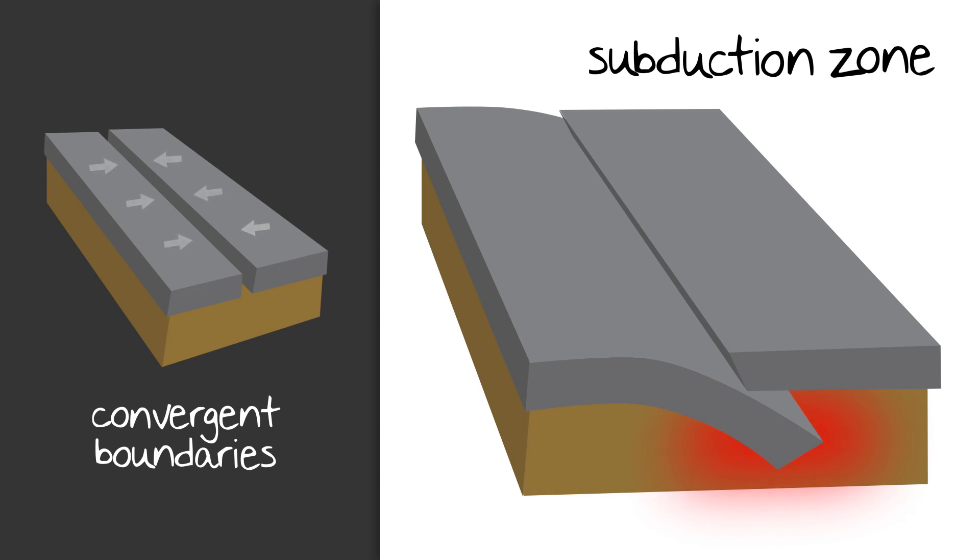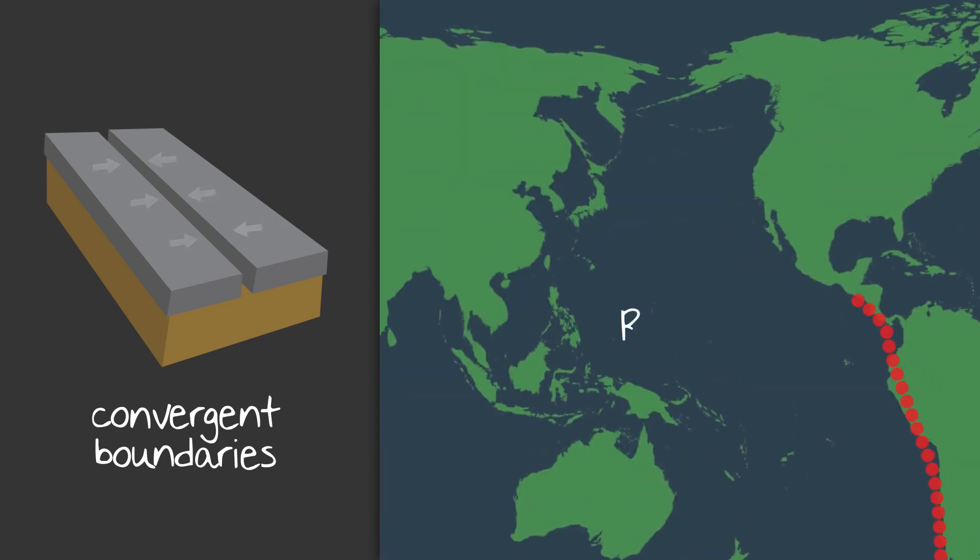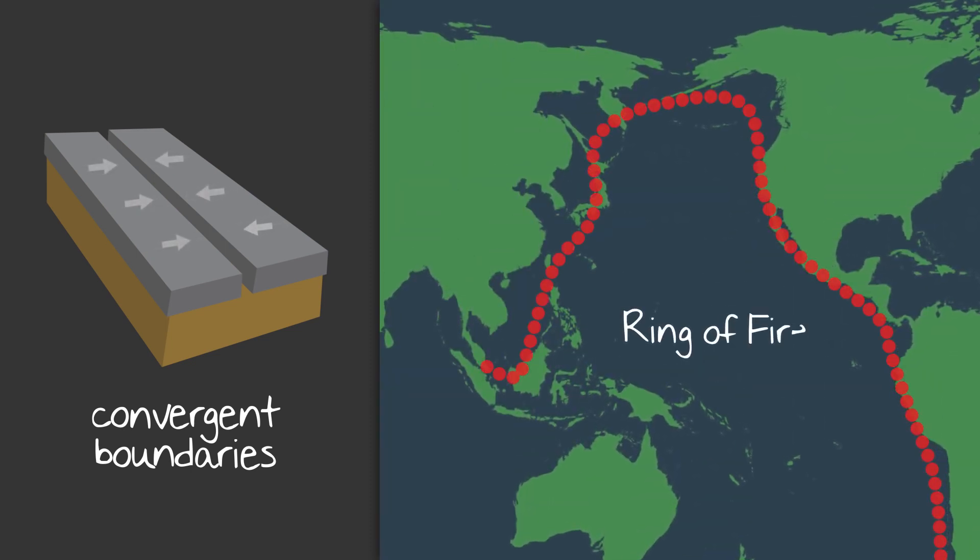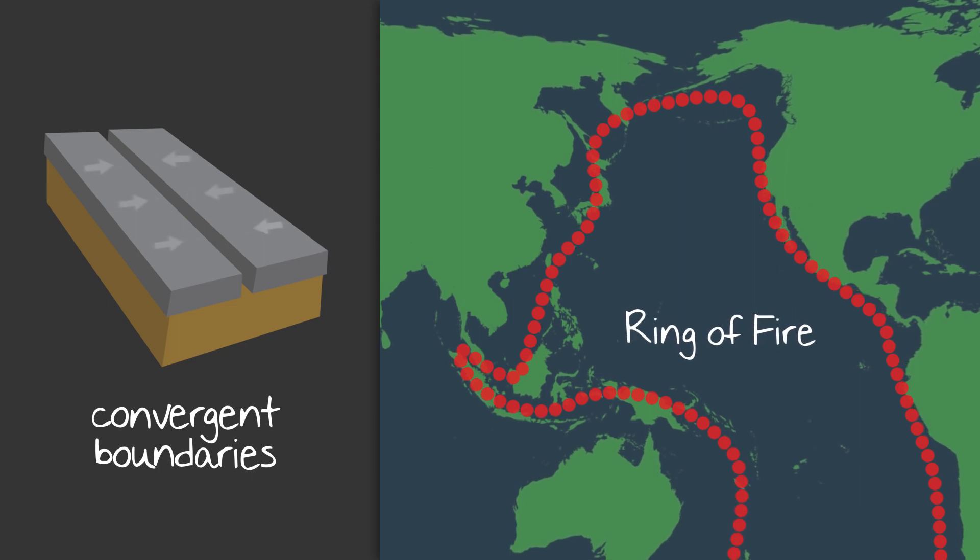And the deeper under the Earth's surface that plate goes, the more pressure it creates. That pressure, coupled with high heat, causes the crust to melt forming magma. The magma presses up towards the surface, and voila, you've got a volcano. An example of this is the Ring of Fire, which is an active ring of volcanoes that encircles the Pacific Ocean.